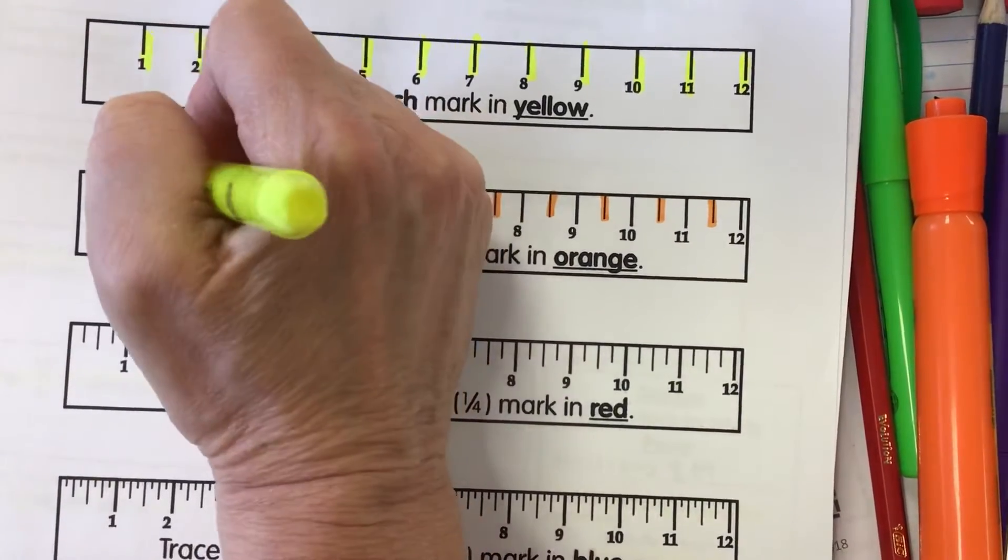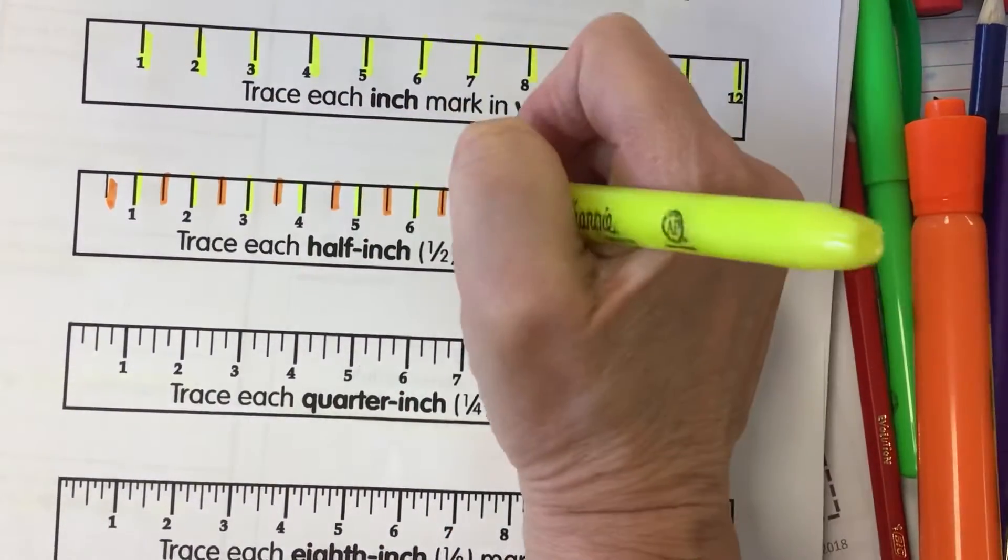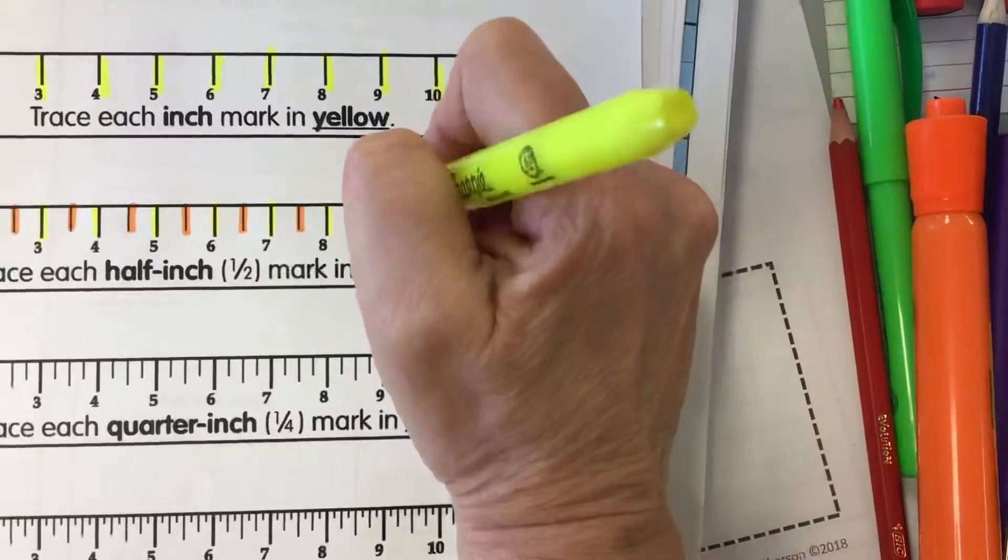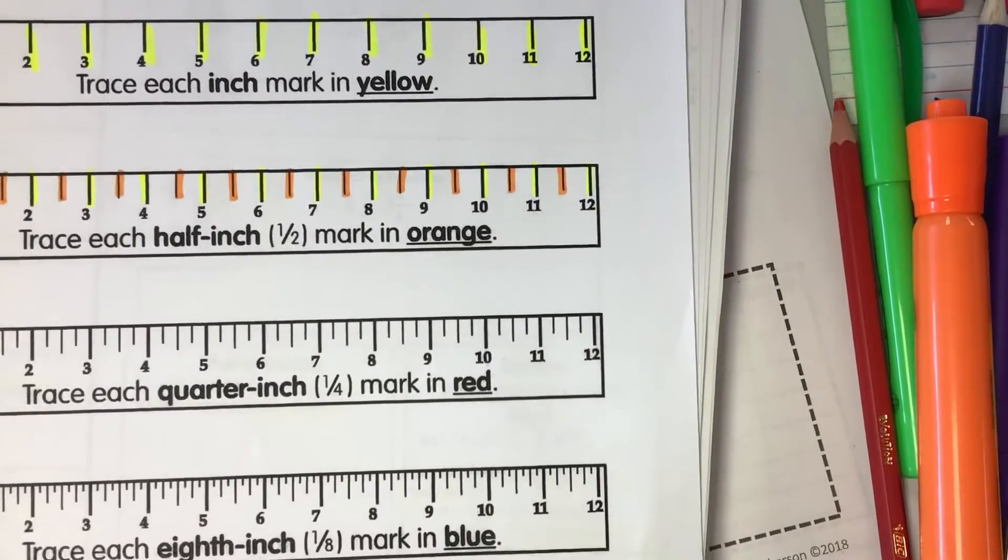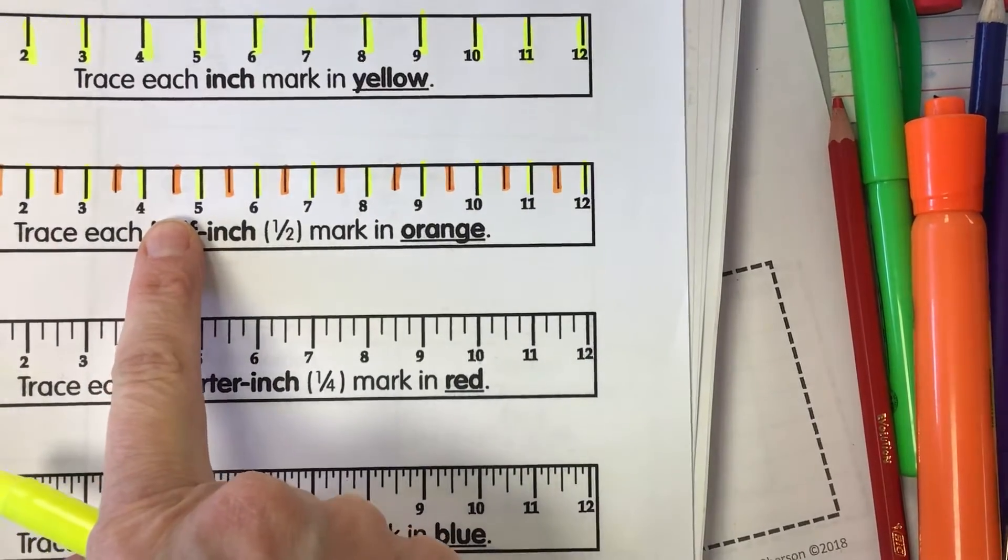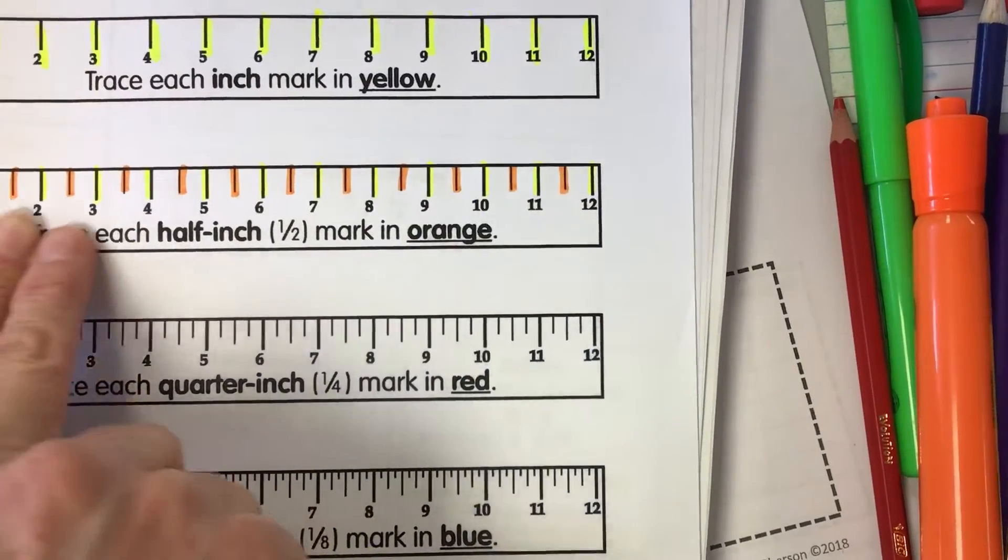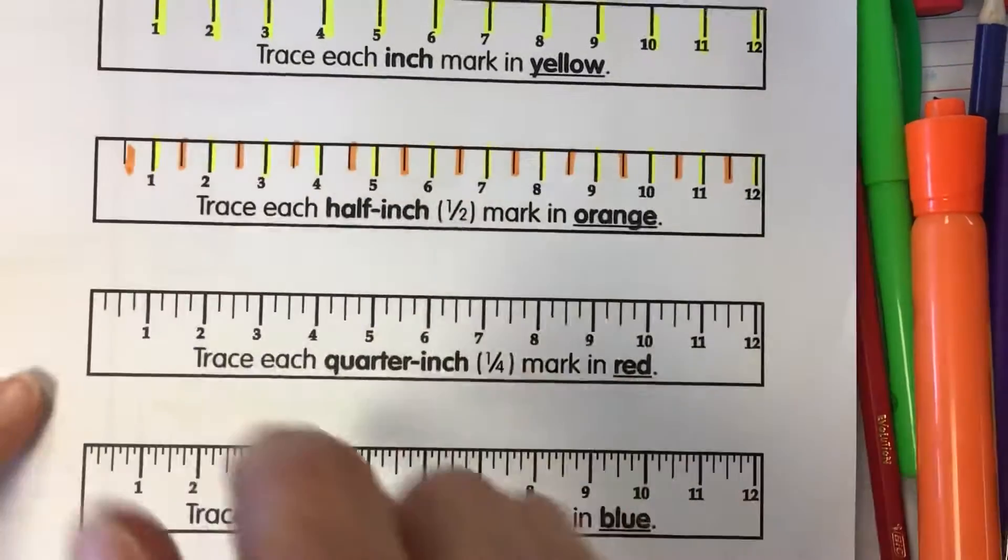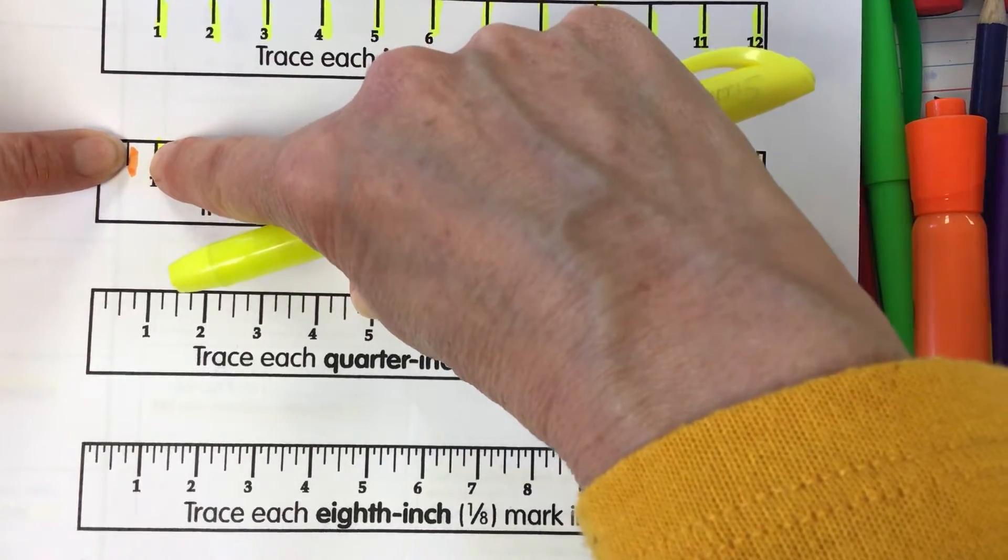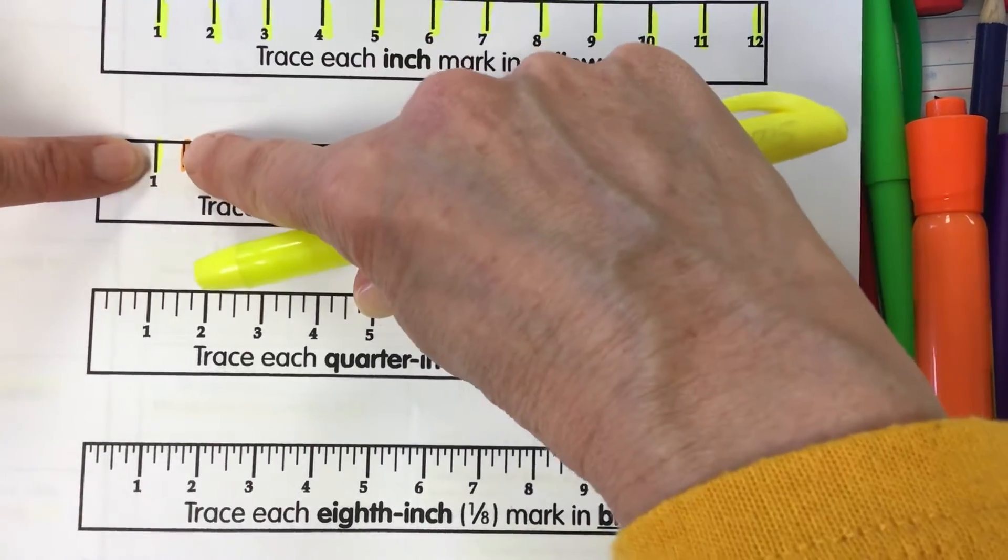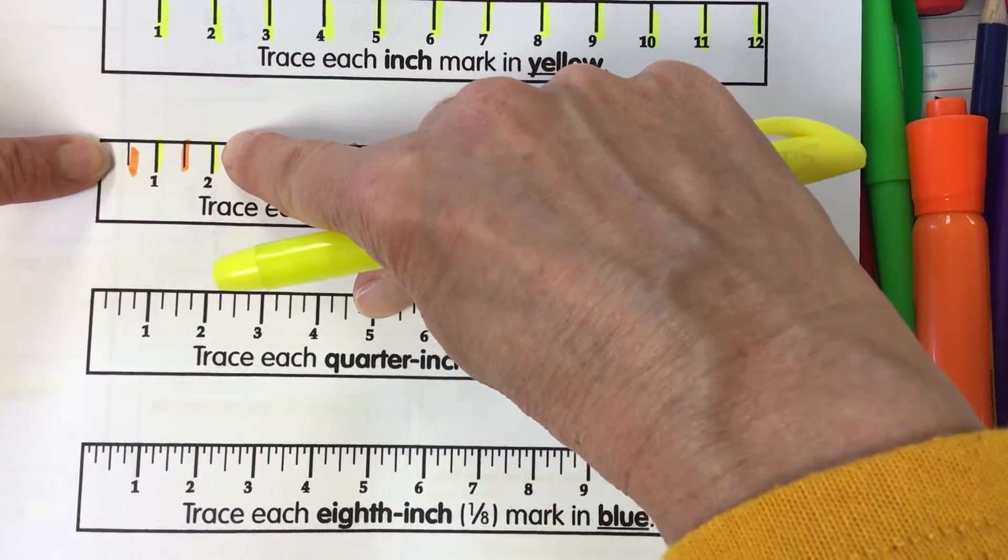So if you were asked to measure to the nearest half inch, this is kind of a confusing question because sometimes you think, oh I'm supposed to measure to the nearest half inch, I need to measure to one of these orange lines. But that's not true because each of these lines represents a half of an inch. That's a half inch. This is another half inch which gives you a whole inch. Then we have another half inch which is one and a half inches, and then another half inch taking us to two inches.